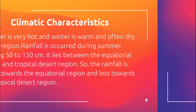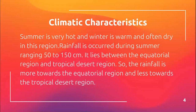Climatic characteristics. Summer is very hot and winter is warm and often dry in this region. Rainfall occurs during summer, ranging 50 to 150 centimeters. It lies between the equatorial region and tropical desert region, so the rainfall is more towards the equatorial region and less towards the tropical desert region.